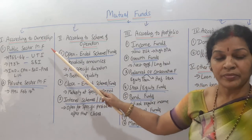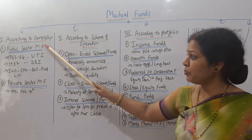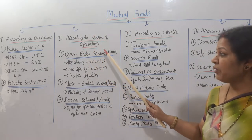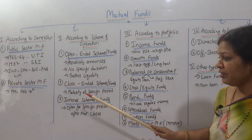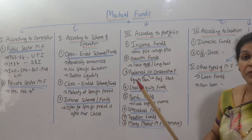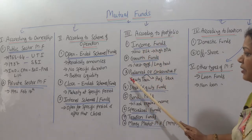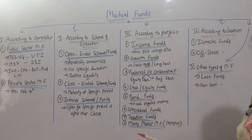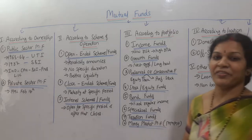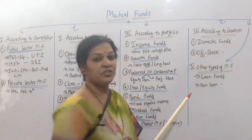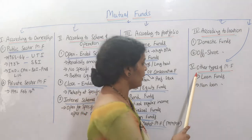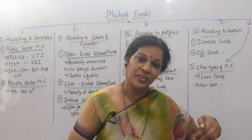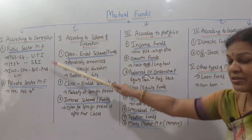The five categories are: first, according to ownership — public sector and private sector mutual funds. Second, according to scheme of operation — open-ended schemes, close-ended schemes, and interval scheme funds. Third, according to portfolio — income funds, growth funds, balanced and conservative funds, stock equity funds, bond funds, specialized funds, taxation funds, and money market mutual funds (MMMF). Fourth, according to location — domestic funds and offshore funds. Fifth, other types — loan funds and non-loan funds.